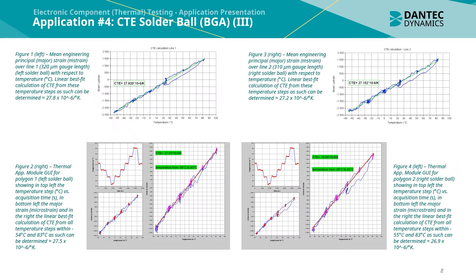The measurement results from Application 4 show the mean engineering principal major strain in millistrain over the line 1 gauge element with respect to temperature. A linear best fit calculation of the CTE from these temperature steps was determined to be approximately 27.8 × 10⁻⁶ per degree Kelvin for the left solder ball. Figure 3 shows the same graph for the right solder ball, where the CTE was determined to be 27.2 × 10⁻⁶ per degree Kelvin.